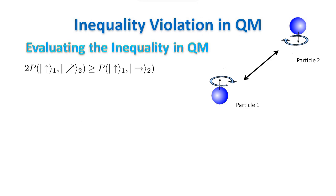We want to evaluate the inequality for our system and we need to clarify a few things. First of all, we need to use projector operators. This is because if a system is in the state psi, the probability to find the state of the system in a subspace spanned by a subset of eigenvectors phi_i is given by the expectation value of the projector operator relevant to that subspace. This comes from the postulates of quantum mechanics.